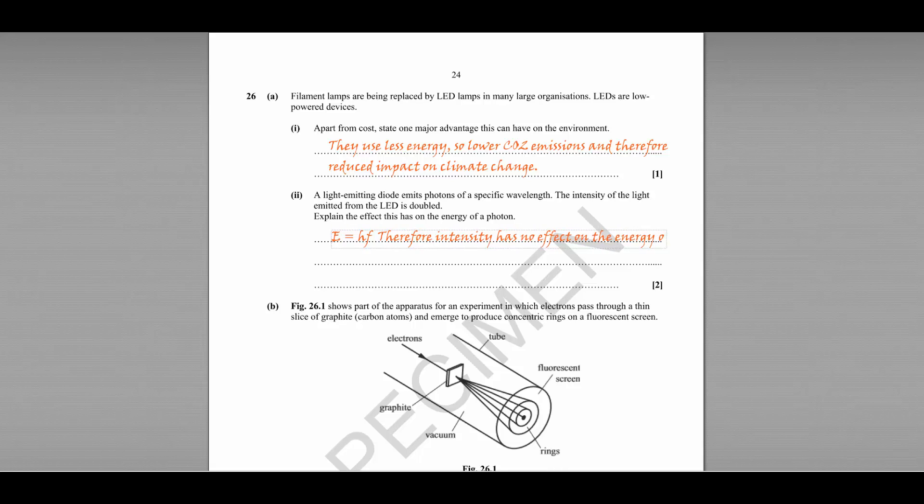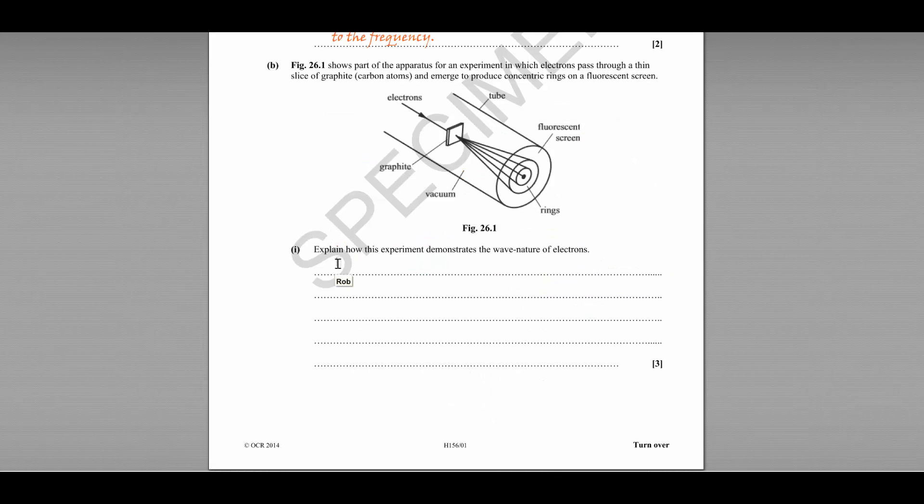Part Bi shows us the apparatus for an experiment where we have electrons passing through a thin slice of graphite, emerging to produce concentric rings on a fluorescent screen. Explain how this experiment demonstrates the wave nature of electrons. So the experiment shows diffraction, which is a wave property.